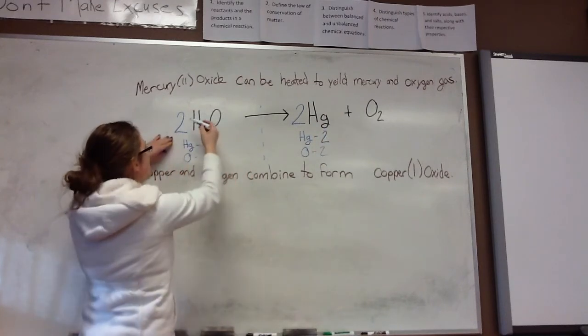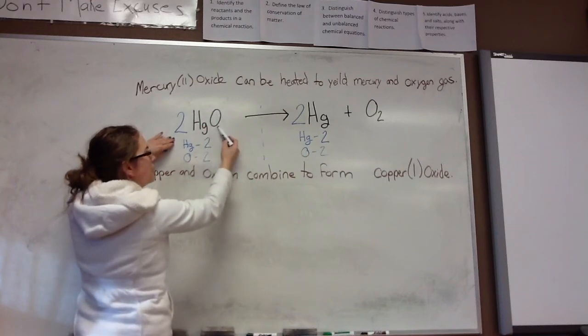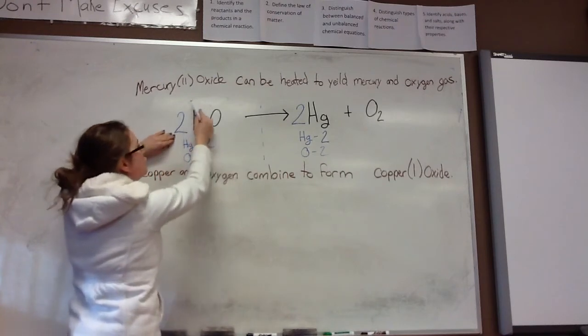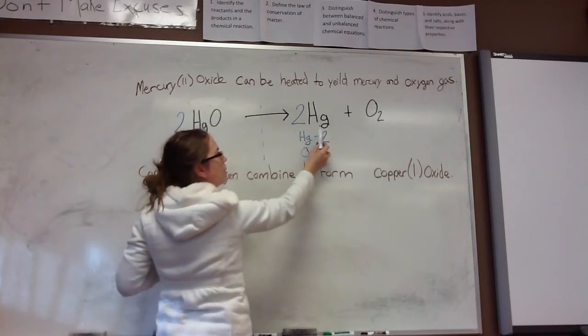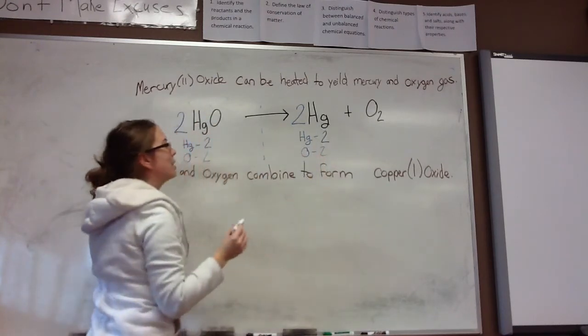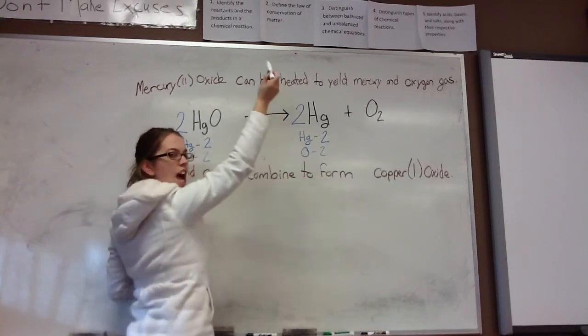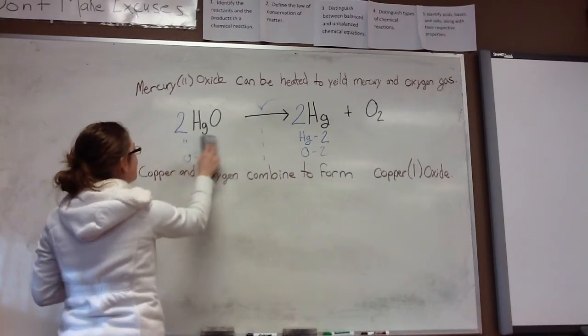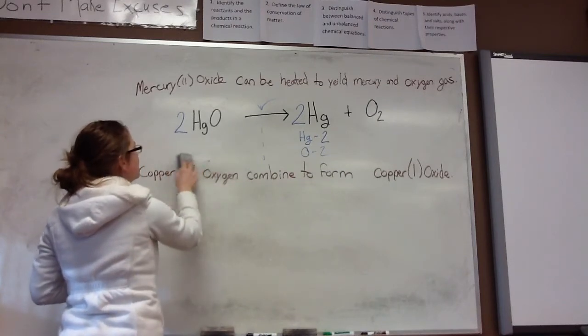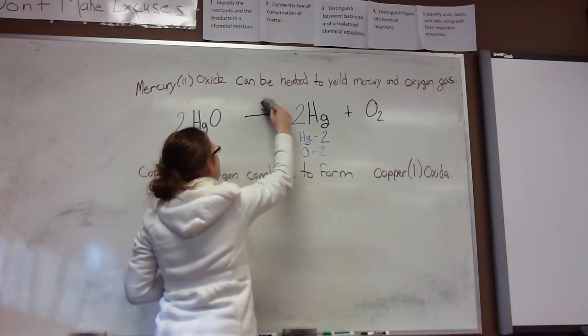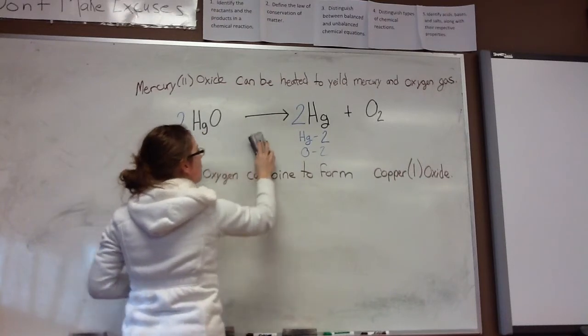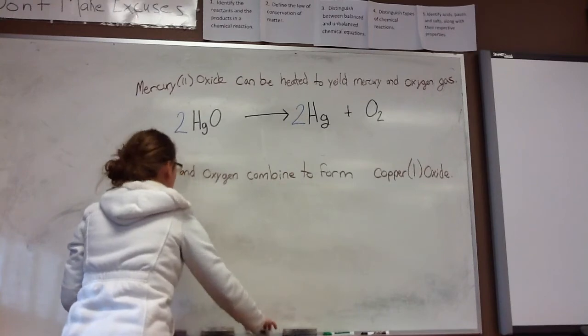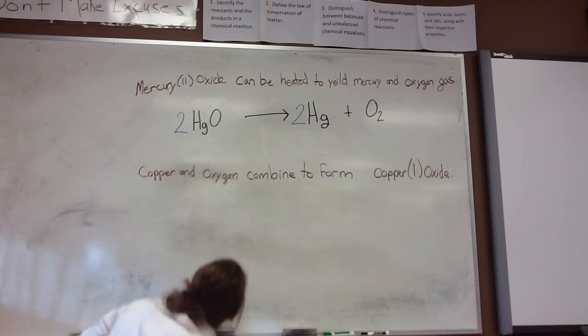As you can see on this side of the equation, we have two oxygens and we have two oxygens over here. We have two mercuries and we have two mercuries over here. Now it's balanced. Check! And you can erase your work or you can keep your work on there. I'm going to erase it so it looks a little bit neater.